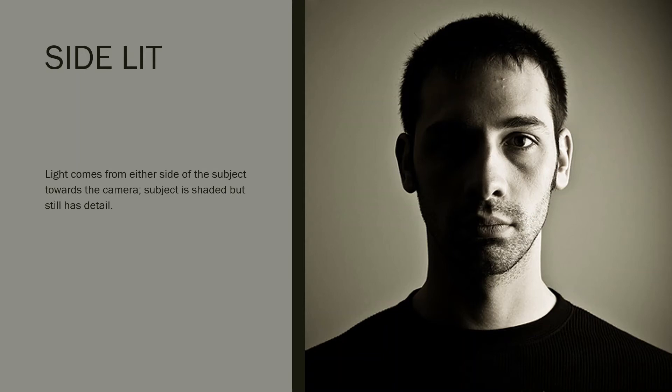Next we have side-lit. The way we can tell that a subject is side-lit is if the light is coming from the side, meaning the shadows are going to be pointing toward the side of the face. So we can see some detail but a lot of shadows. The light is going to come from either the right side or the left side of the subject. You can see that half of my face is illuminated while the other half is darker, and the shadows reflect every little line, wrinkle, or imperfection on my face.